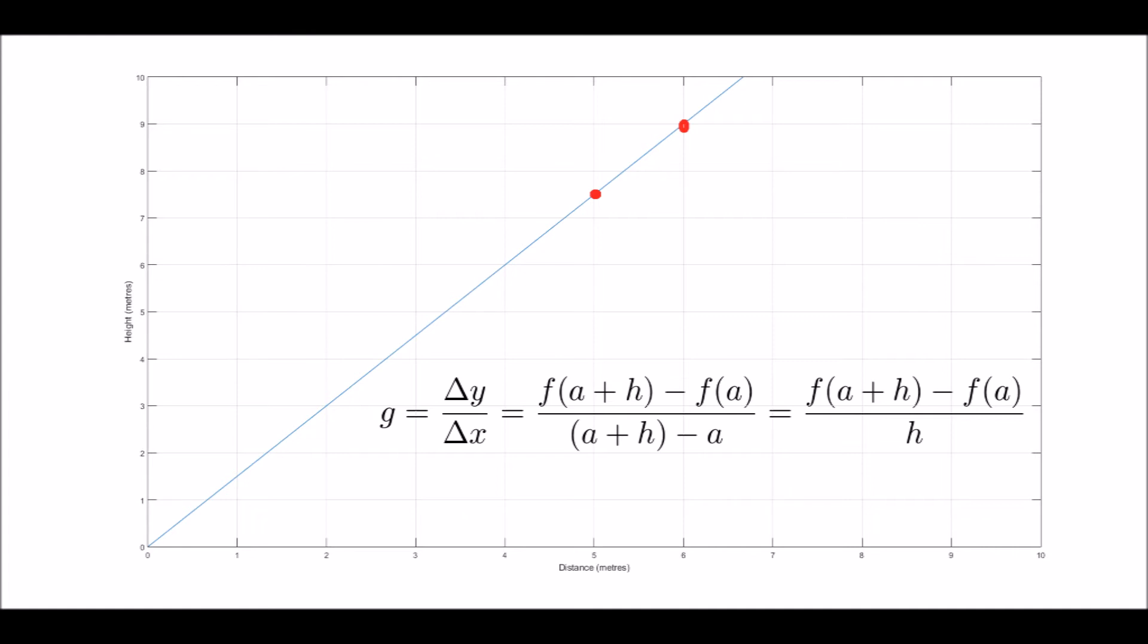To show how this works, let's say A is 5 and h is 1. We can see then that f(a) is f(5), which is 7.5. f(a+h) is f(6), which is 9. 9 minus 7.5 is 1.5, divided by h which is 1, so we get the gradient as 3 over 2, as we showed earlier.